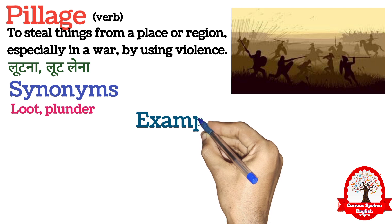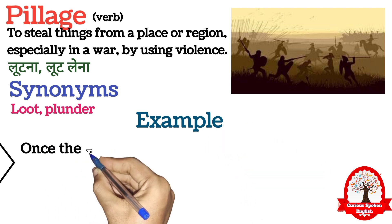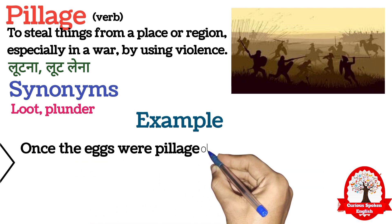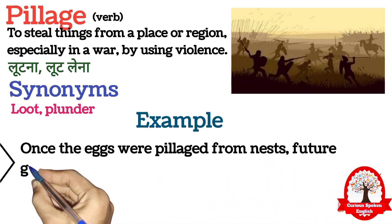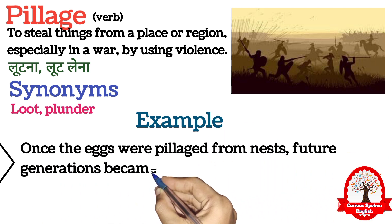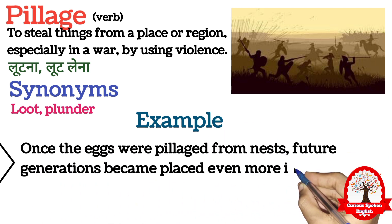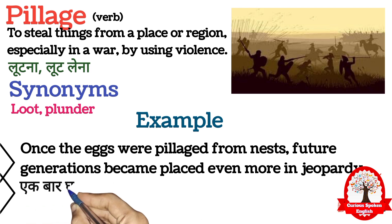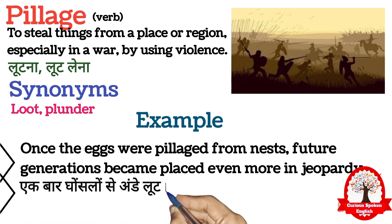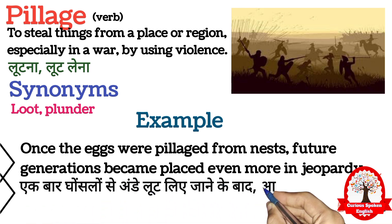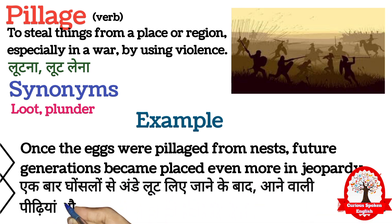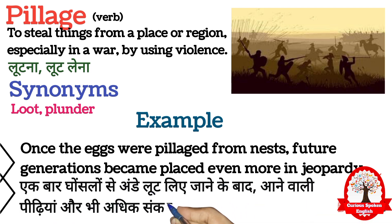Pillage ko lekar examples se sentence mein achhe se samajh lete hain. Once the eggs were pillaged from nests, future generations became placed even more in jeopardy. Ek baar ghonslon se ande loot liye jaane ke baad, aane waali peedhiyaan aur bhi adhik sankat mein pad gayi.